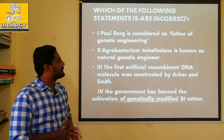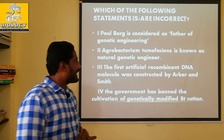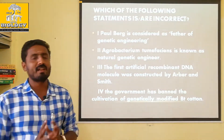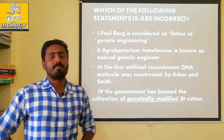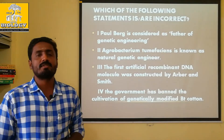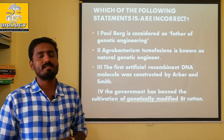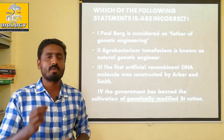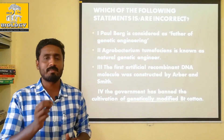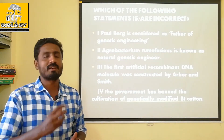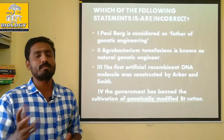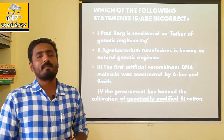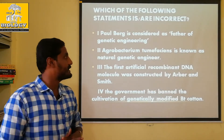Second statement: Agrobacterium tumefaciens is known as the natural genetic engineer. In genetic engineering, we take a DNA sequence, insert it into a bacterial plasmid, and produce proteins. Now let's talk about what Agrobacterium tumefaciens does.